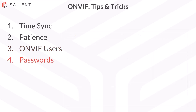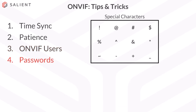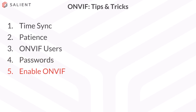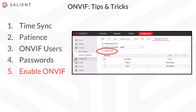The next tip is passwords — specifically, passwords with special characters. Occasionally, special characters can cause issues with authentication. If you see a message in the CompleteView dashboard indicating that the camera rejected the credentials, first check that the password you entered is correct, and if it is, try removing or substituting special characters with regular characters. Another tip is enabling ONVIF. Some cameras require you to turn ONVIF on as a feature, so check your camera manufacturer's user manuals or websites for instructions.